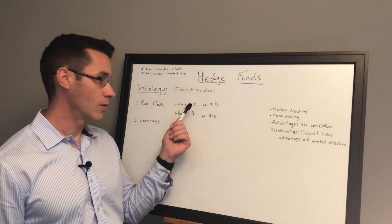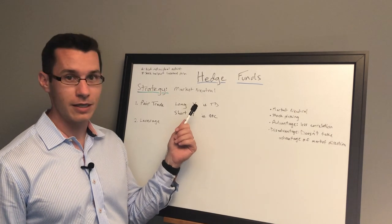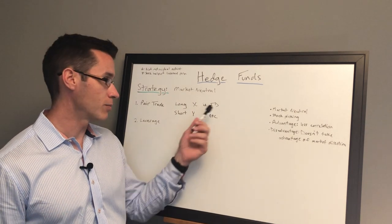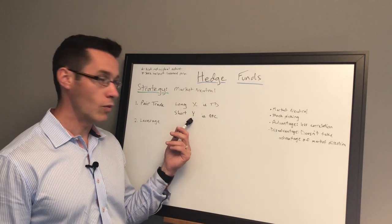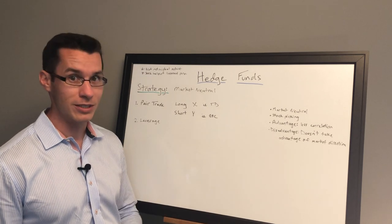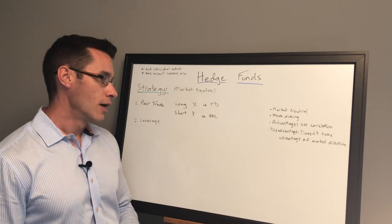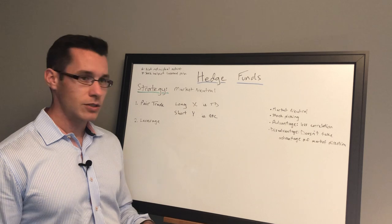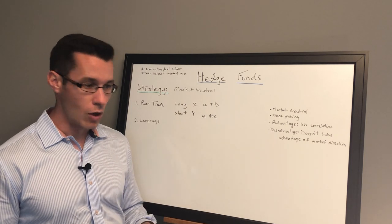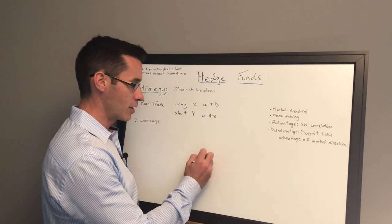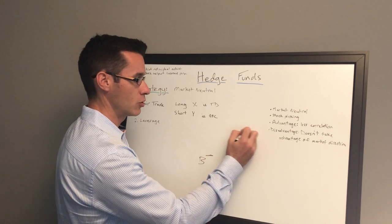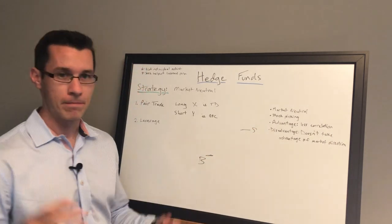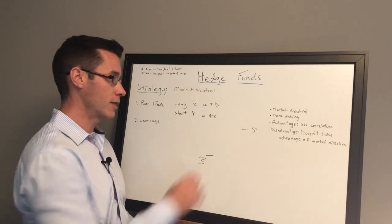So you can go long one stock - in this case let's use, not recommending either of these, but TD. You can go short Y stock, or you can name it RBC, whatever you want. Let's talk about long for a second. Long is anytime you buy a stock and you buy it at a lower price and you try to sell it at a higher price. That's going long. You're buying low, selling high.